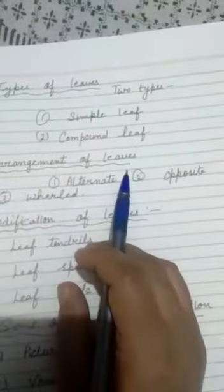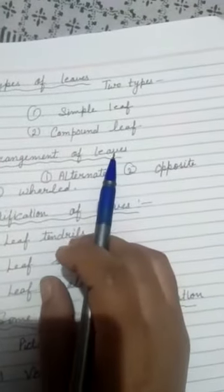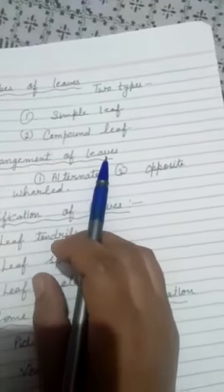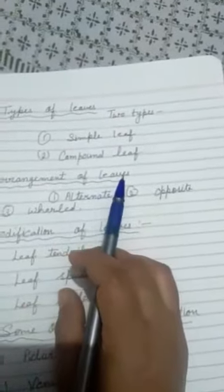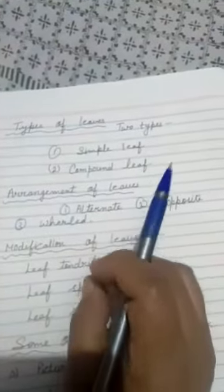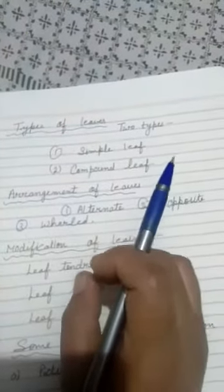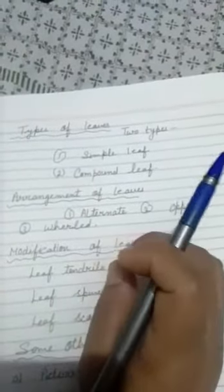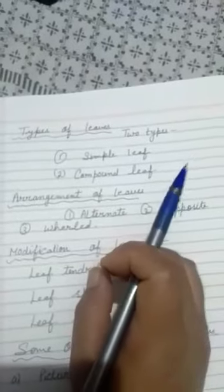In an alternate arrangement, only one leaf arises from the node. No leaf is found just below or above another leaf. The leaf arising from the next node is in opposite direction to the previous leaf. Rose and china rose are the examples of plants that have such arrangement.